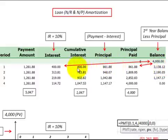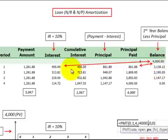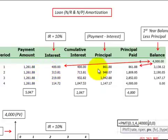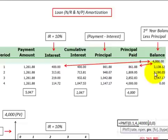We go back and do the same routine. We determine the interest expense for the year by taking 10% times the current balance of $3,138, giving us an interest expense of $314. We subtract that interest from the payment amount to get the principal reduction for year two. Then we subtract that from the balance to get a new principal amount for year three.